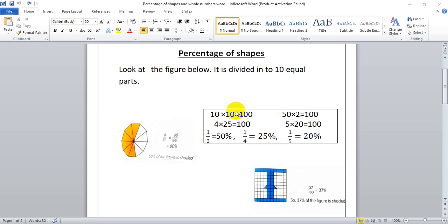Before we start the lesson, you have to keep in your mind these things. 10 times 10, 50 times 2, 4 times 25, and 5 times 20 all equal 100. And 50 percentage means half, quarter is 25 percentage, and 1 fifth is 20 percentage. These should be in your mind.